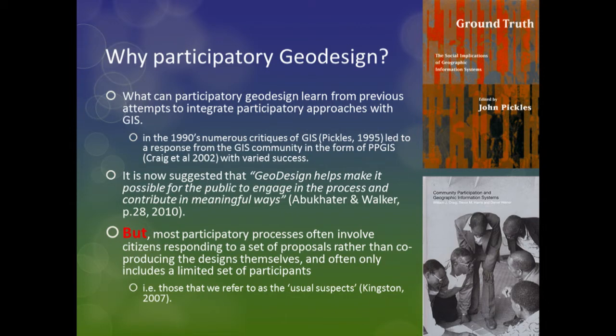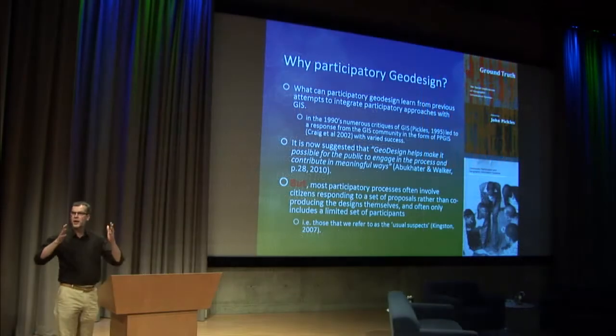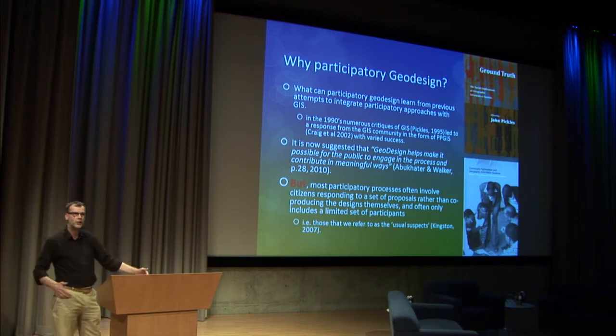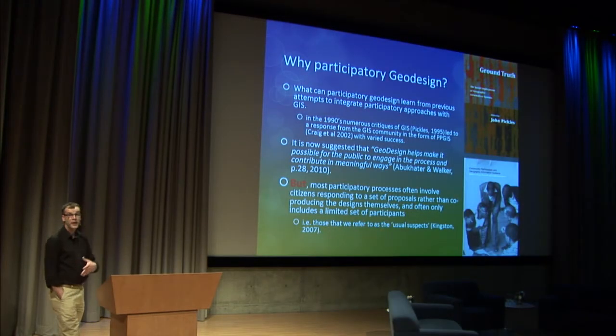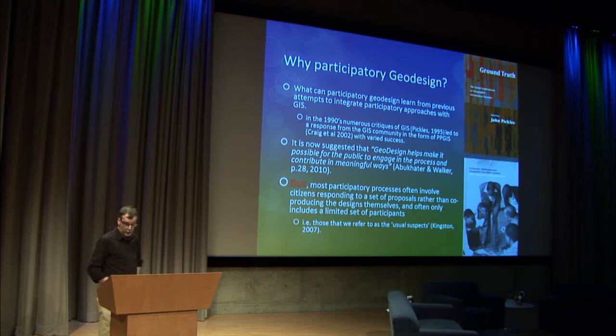It's been suggested that geodesign helps make it possible for the public to engage and contribute in meaningful ways. But one of the problems — alluded to yesterday — is the bell curve: at the two extremes you get a dominant vocal minority against proposals. Most participatory processes involve citizens responding to a set of proposals rather than co-producing designs themselves, and it's often a limited set of participants — the 'usual suspects.'